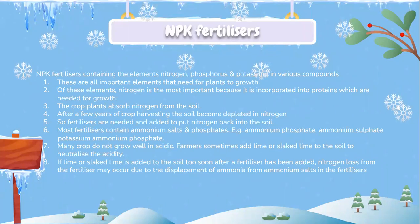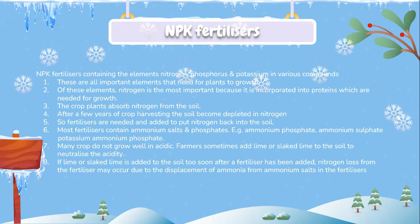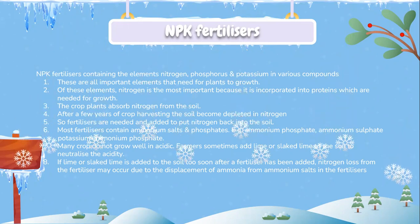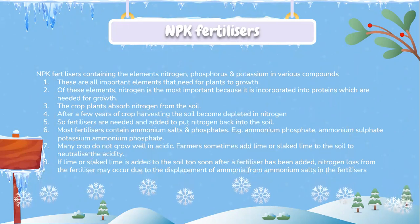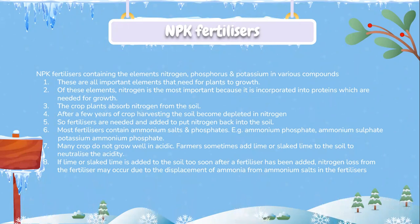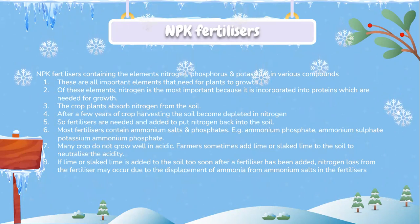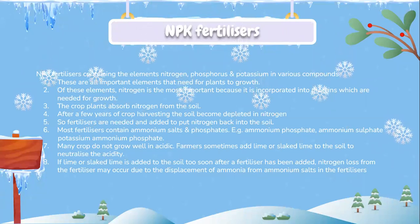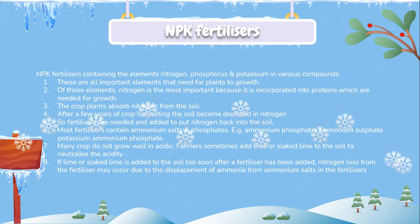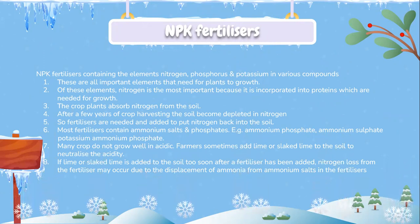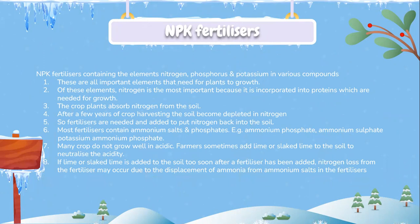Let's look into NPK fertilizers. NPK fertilizers contain the elements nitrogen, phosphorus, and potassium in various compounds. These are all important elements needed for plants to grow. Of these elements, nitrogen is the most important because it is incorporated in proteins, which are needed for growth. Crop plants absorb nitrogen from the soil. After a few years of crop harvesting, the soil becomes depleted in nitrogen, so fertilizers are needed and added to put nitrogen back into the soil.